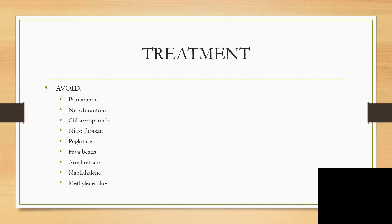For treatment, first thing first: avoid what you can. Avoid certain medications and food items. Primaquine — unfortunately associated with malaria treatment — should not be prescribed to G6PD-deficient patients. For a G6PD-deficient patient with a urinary tract infection, no nitrofurantoin — please take it off the table.